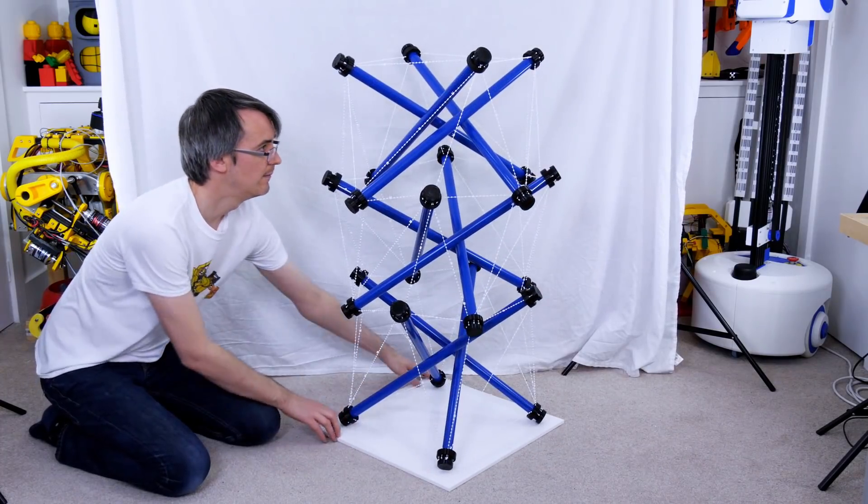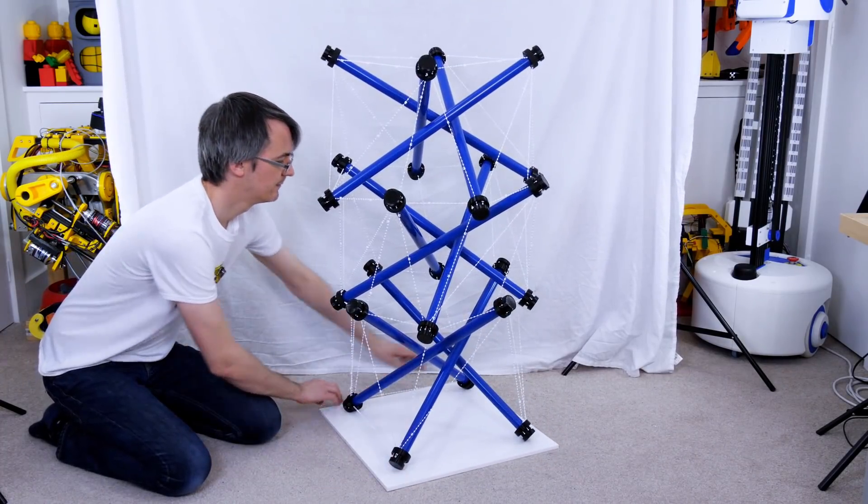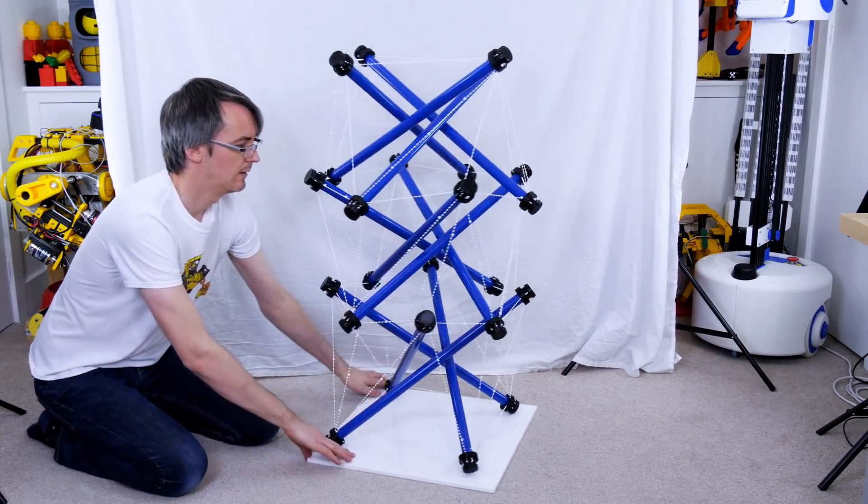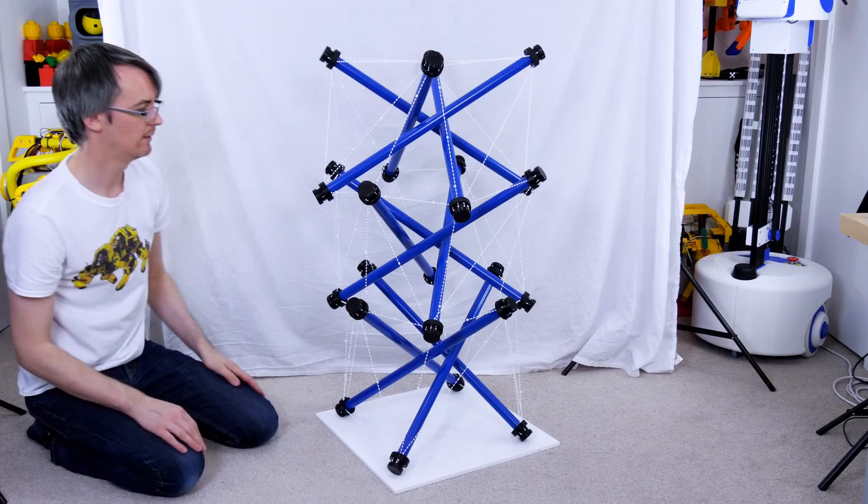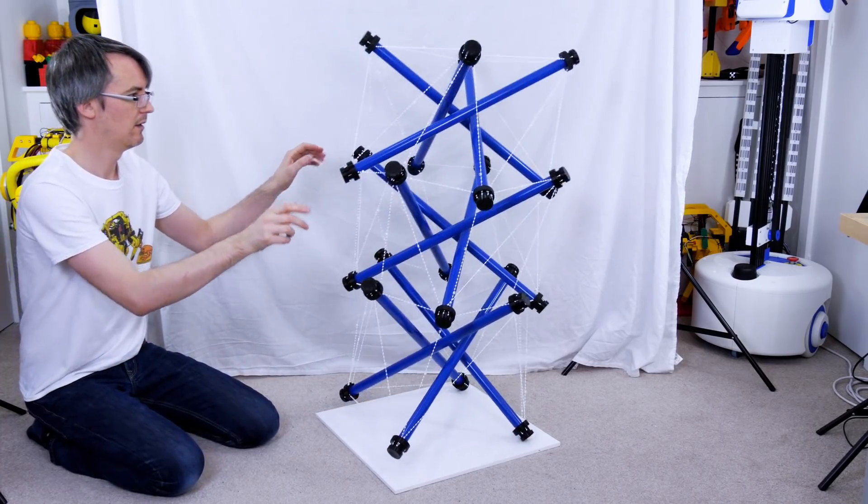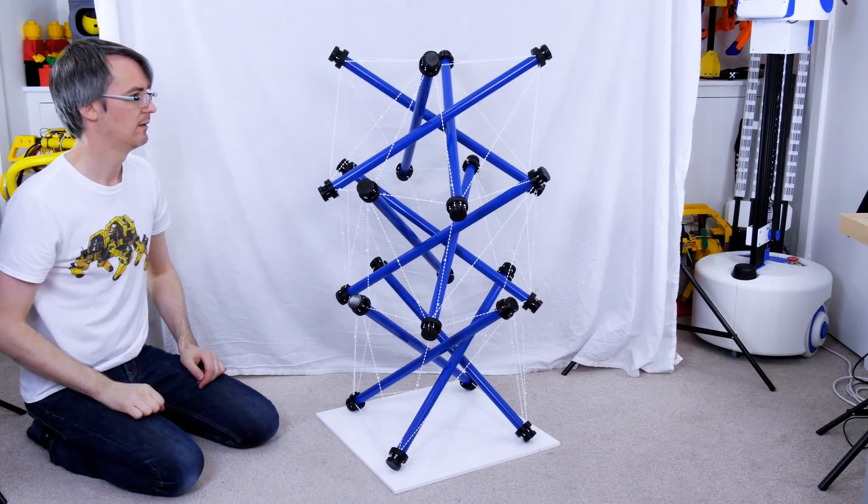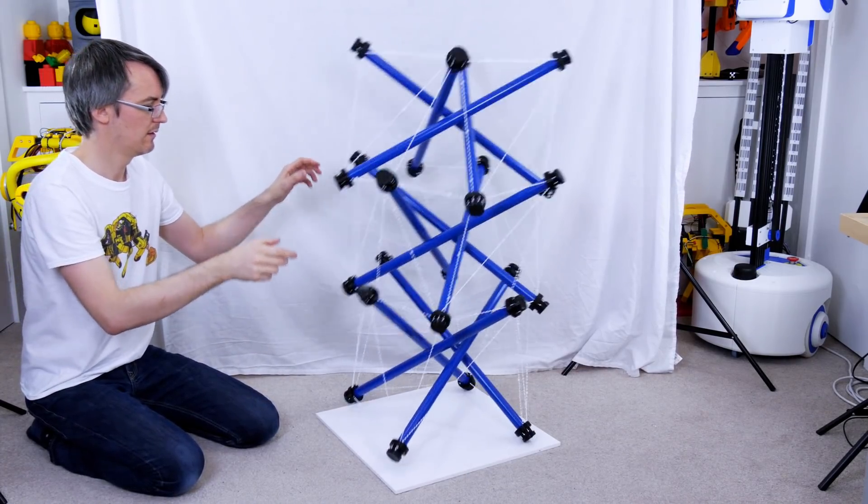So having added those you can see it's pulled the structure down so the sticks aren't so vertical and they're lying flatter, but they aren't touching each other still so we still have a tensegrity sculpture, and the whole structure is much more rigid so you can see there's hardly any wobble in that now. It really is a very rigid structure.